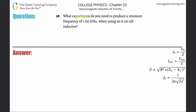Number 98. What capacitance do you need to produce a resonant frequency of 1 gigahertz when using an 8 nanohenry inductor? Since we're talking about resonant frequency, let's write out the formula. That's equal to 1 divided by 2π multiplied by the square root of the inductance multiplied by the capacitance.